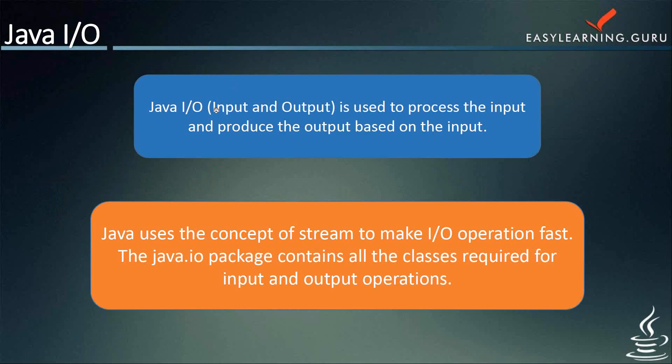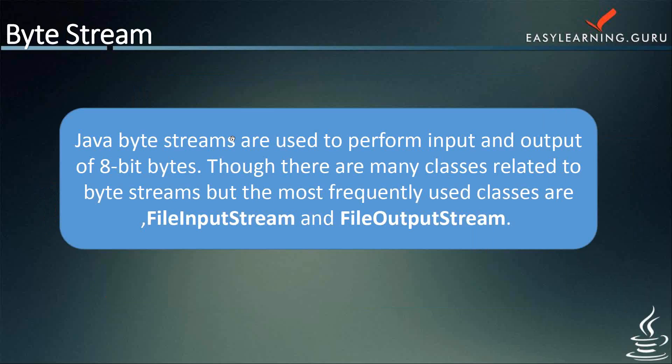First, we'll talk about byte streams. Java byte streams are used to perform input and output of 8-bit bytes. Though there are many classes related to byte streams, the most frequently used classes are FileInputStream and FileOutputStream. I'll give you an example which makes use of these two classes to copy an input file to an output file.